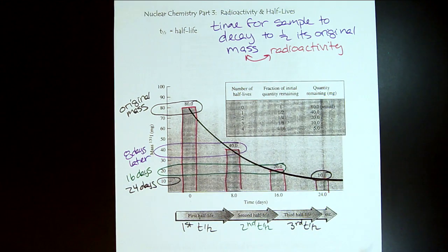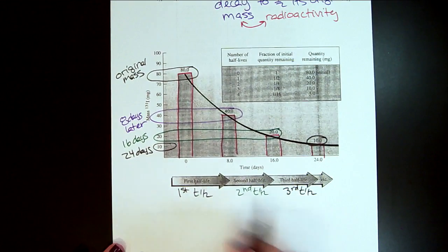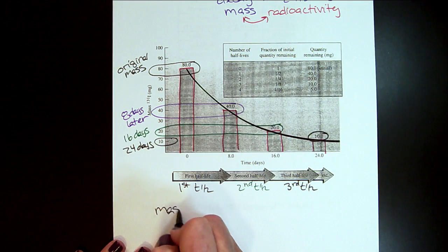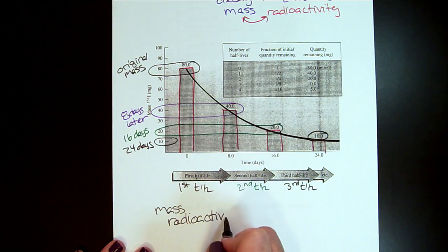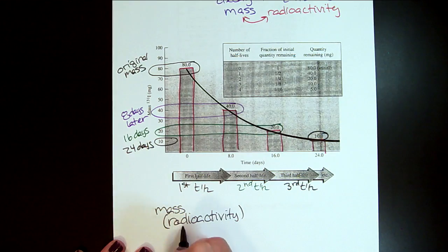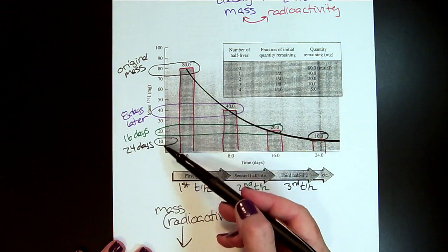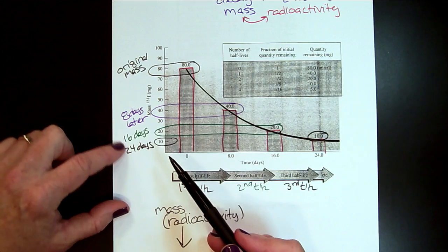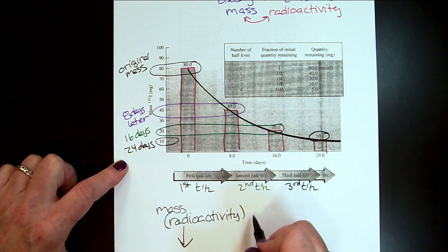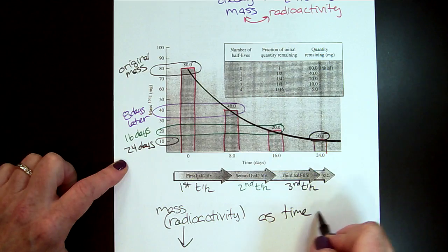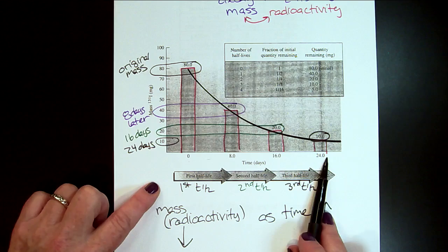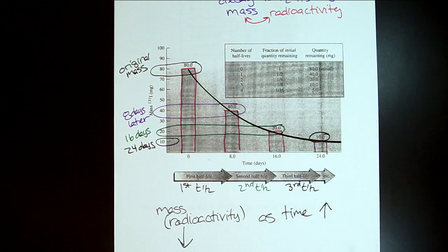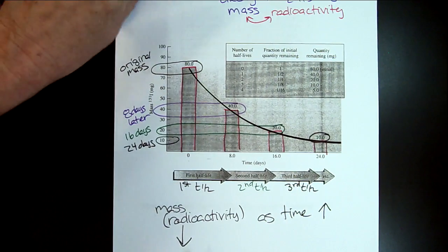So the important thing, so this is an inverse relationship. So the mass or the radioactivity decreases, we have less and less sample. But notice that the time is getting bigger. As time increases, so the longer we wait, the less sample we have. So it's really important to get that inverse relationship. So let's practice working with that a little bit.